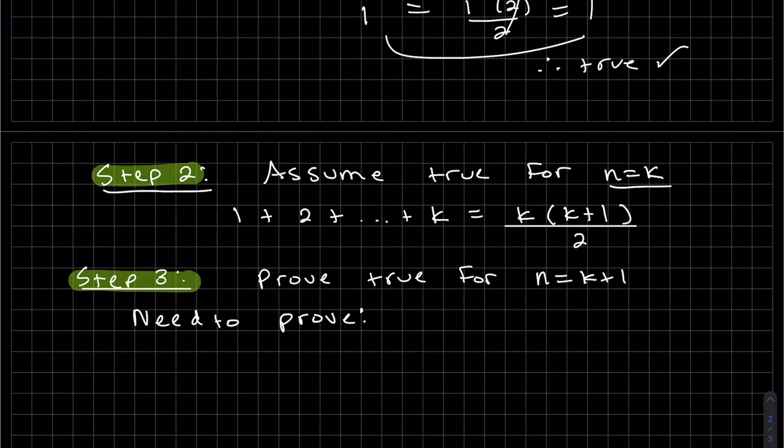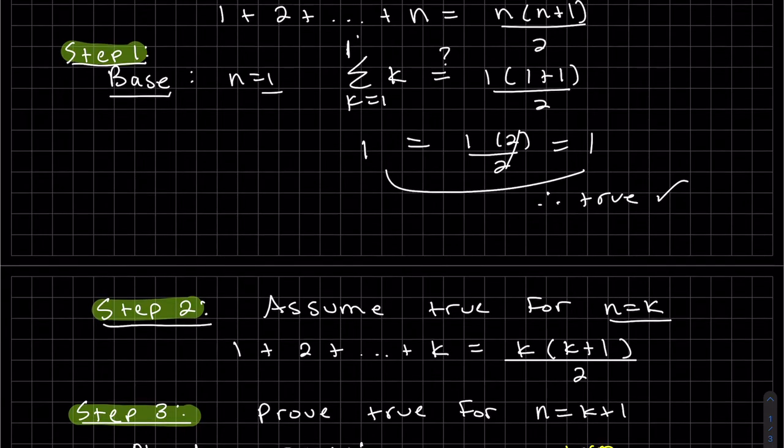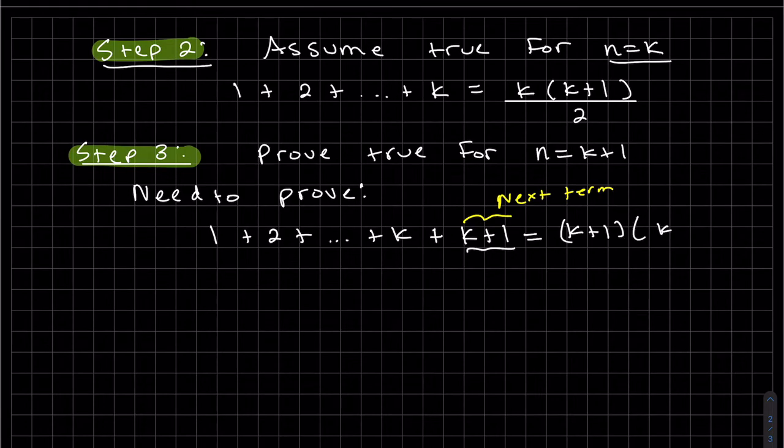So we want to prove true for n equals k plus 1. So let's write that out. We want to prove 1 plus 2 plus k is our previous one, but we want to prove for one more term. The next term is k plus 1. You can see we're just adding 1 to the previous one. And we're taking our n here and replacing it with k plus 1. Again, instead of n times n plus 1 over 2, it's k plus 1 over k plus 1 plus 1.